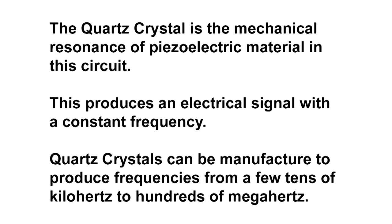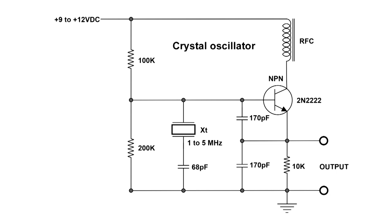The quartz crystal is the mechanical resonance of the piezoelectric material in this circuit. This produces an electrical signal with a constant frequency. Quartz crystals can be manufactured to produce frequencies from a few tens of kilohertz to hundreds of megahertz. What that means is the quartz crystal in this circuit actually physically vibrates, and when it does that, it produces a very stable frequency. They are made for specific frequencies.